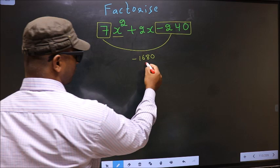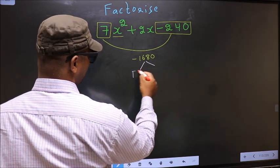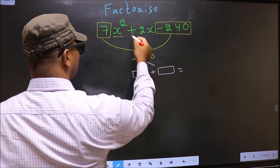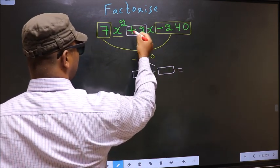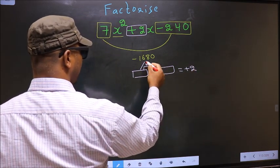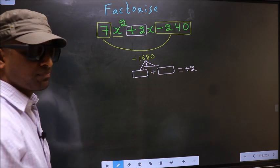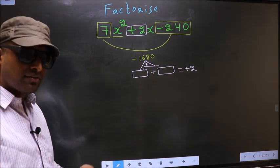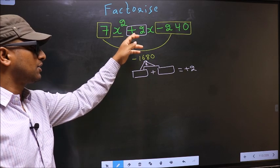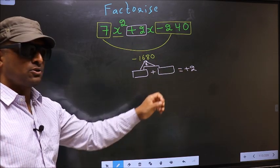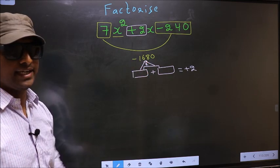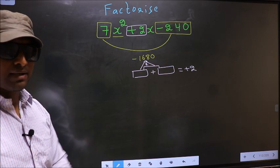Next, now you should look out for 2 numbers such that when you add these 2 numbers, you should get middle coefficient +2, and also when multiplied, you should get -1680. I repeat: you should look out for 2 numbers such that when you add them, you should get middle coefficient +2, and also when multiplied, you should get -1680. To get those 2 numbers, we should take LCM of 1680.